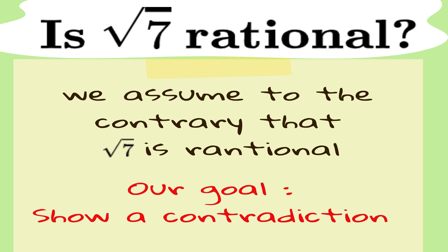Let's get ready to expose this number for what it really is. So here's the game plan. We assume that the square root of 7 is rational and see if that assumption leads to a contradiction. If it does, we'll have no choice but to conclude that the square root of 7 is actually irrational.